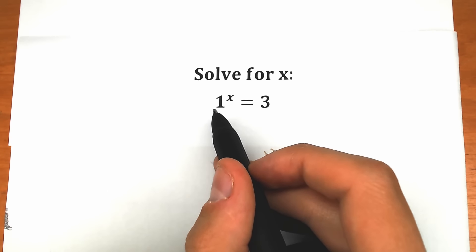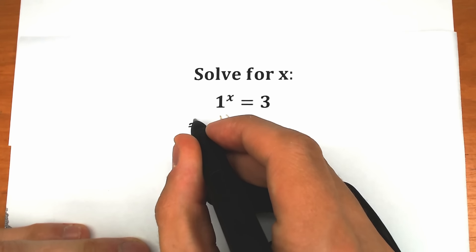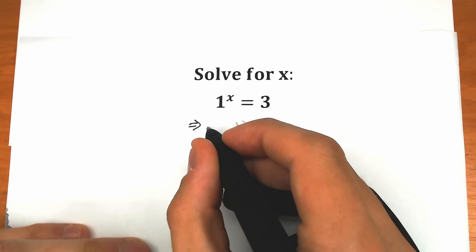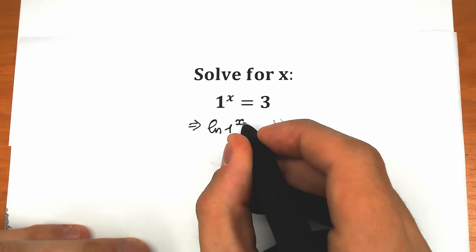First of all, let's apply natural log on both sides. So when we apply natural log on both sides, on the left side we have natural log of 1 to the x, equal to natural log of 3. Now we know that this x will come down because this is the main log property. As a result we have x times natural log 1 equal to natural log 3.